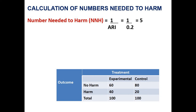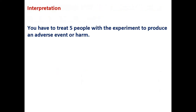Now we can go to the calculation of number needed to harm. Number needed to harm equals 1 divided by absolute risk increase, that is 1 divided by 0.2, which equals 5. To interpret: you have to treat 5 people with the experiment to produce 1 adverse event or harm. Hope you understood. Thank you.